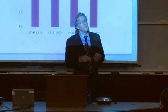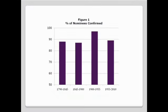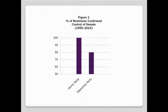Indeed, all three nominees whose confirmation was denied by the Senate between 1955 and 2010 were nominated by a president whose party did not control the Senate. And five of the six nominees who were denied confirmation since 1870 were nominated by a president to an opposing party Senate. As shown by Figure 2, in the past 55 years, 100% of nominees presented by a president whose party controlled the Senate were confirmed — 13 of 13 — whereas only 80% of those nominated by a president whose party did not control the Senate have been confirmed — 12 of 15.